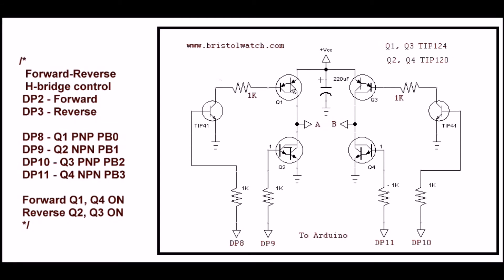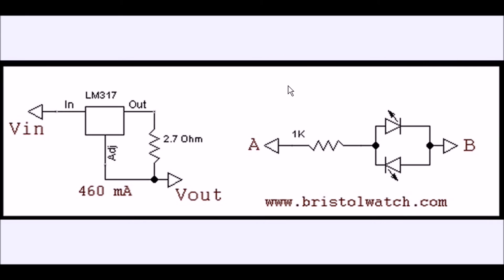And that's why the current limiting circuit we saw is needed. And here's your quick review. This is the safety circuit. It's using an LM317 with a 2.7 ohm resistor. It limits my current to 460 milliamps.